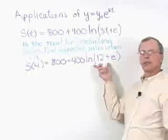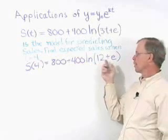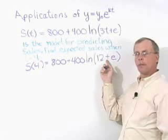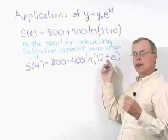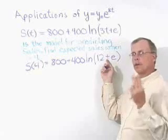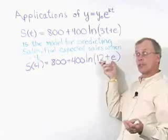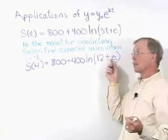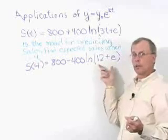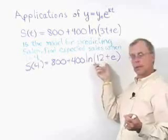Now, we can't use the log properties here because this is a sum. And our log properties involve multiplication or division or powers. And so we just have to take 12 plus e and find its natural logarithm. There's no property to apply here.